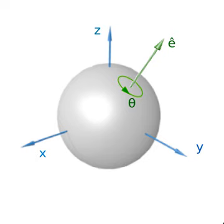A motion of a Euclidean space is the same as its isometry — it leaves the distance between any two points unchanged after the transformation. But a proper rotation also has to preserve the orientation structure. The improper rotation term refers to isometries that reverse the orientation. In the language of group theory, the distinction is expressed as direct versus indirect isometries in the Euclidean group, where the former comprise the identity component. Any direct Euclidean motion can be represented as a composition of a rotation about the fixed point and a translation.